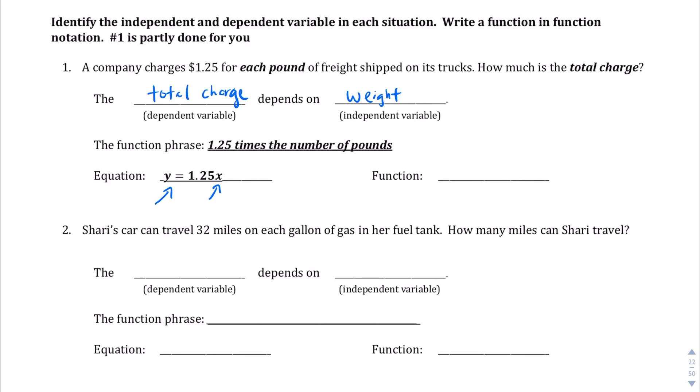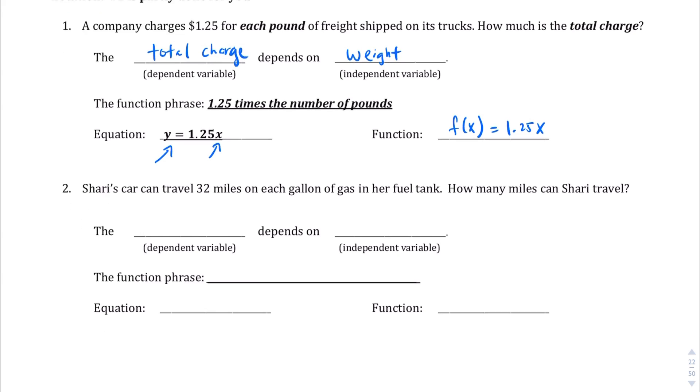So for each pound you multiply that by 1.25. As a function, you write f(x) equals 1.25x, where x is the amount of weight that determines how much you're going to pay.